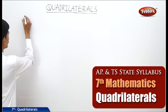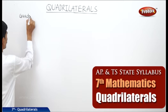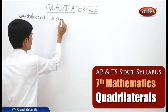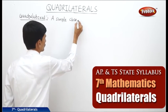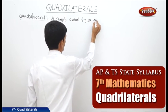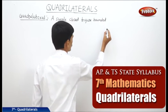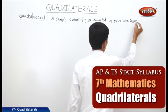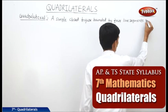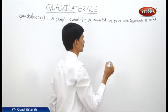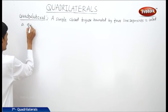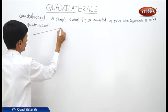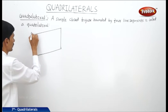So let us write the definition of a quadrilateral. A simple closed figure bounded by four line segments is called a quadrilateral. Now let us draw the figure of a quadrilateral ABCD.